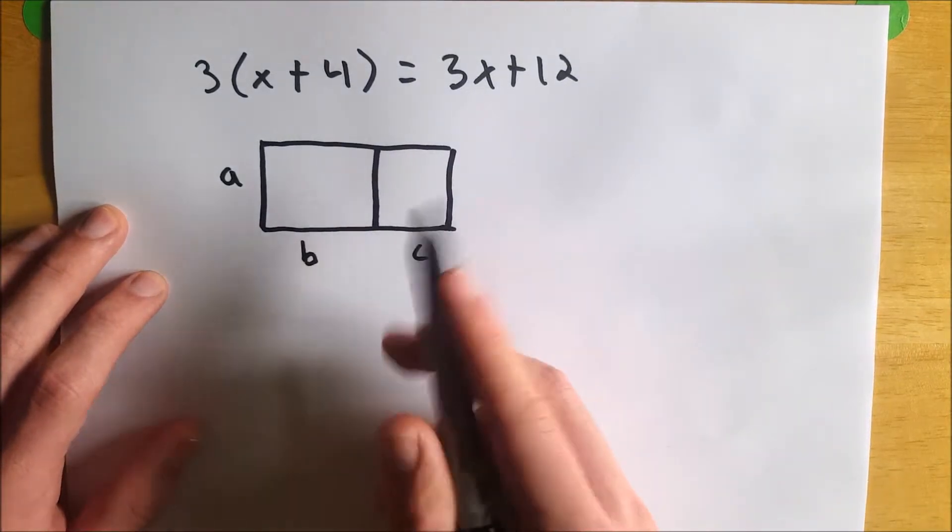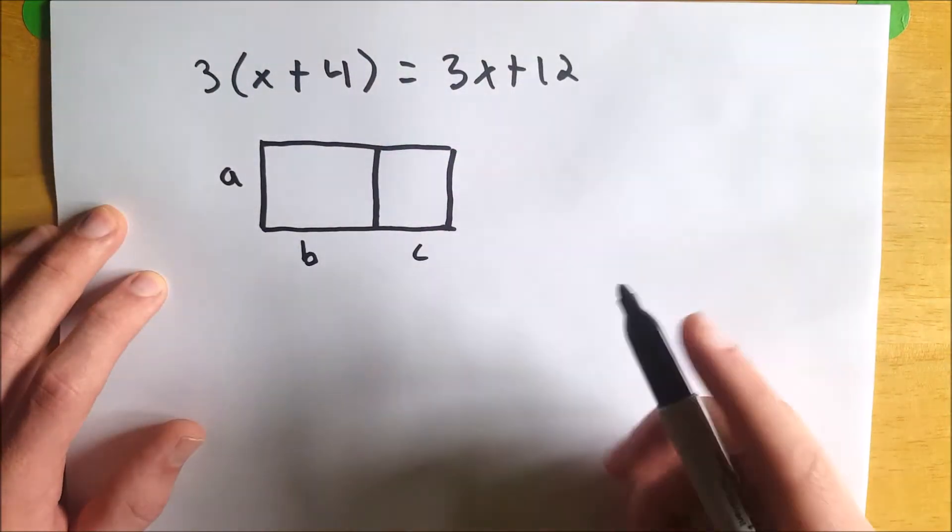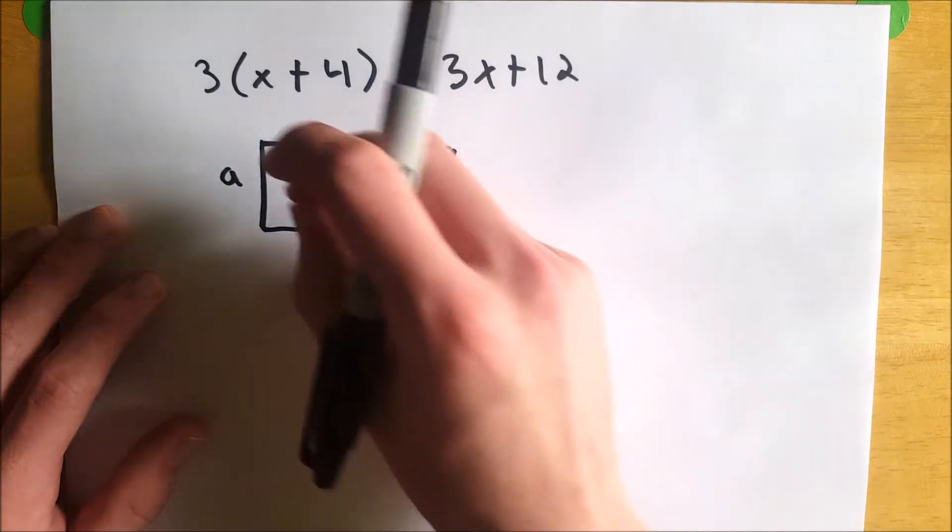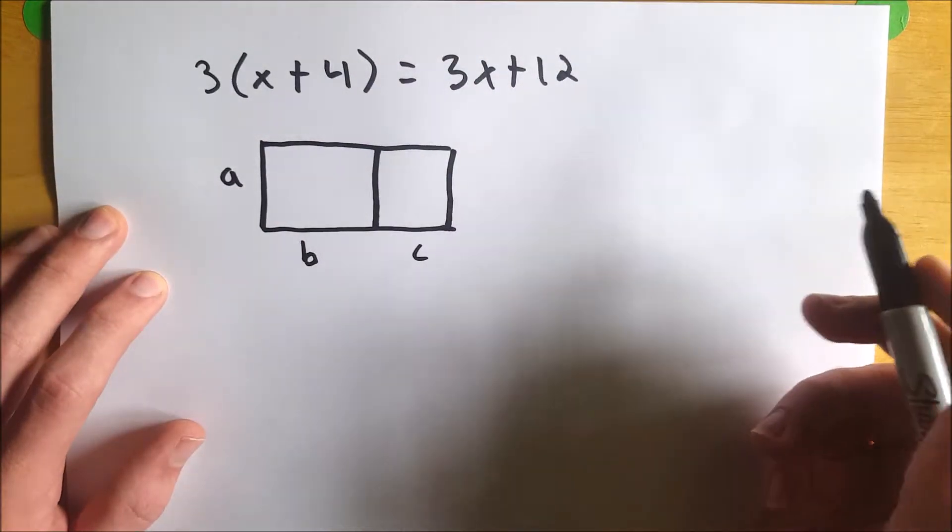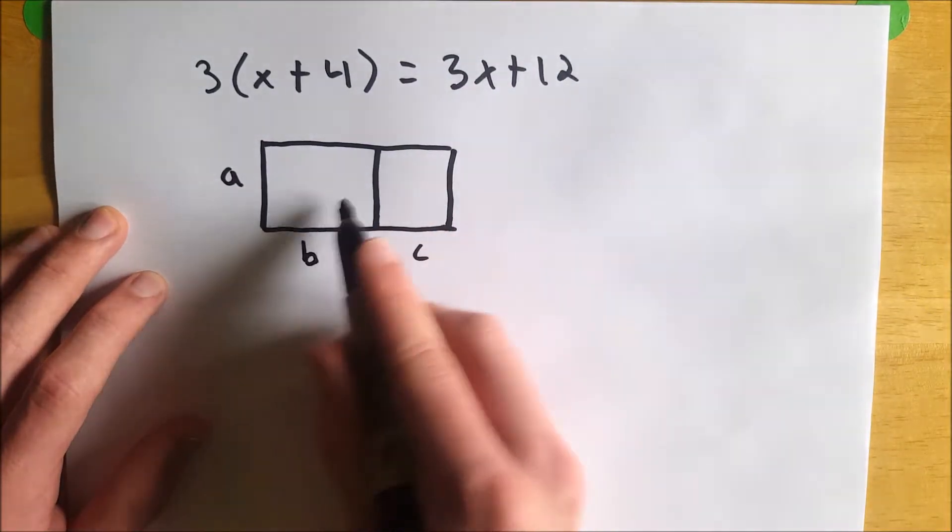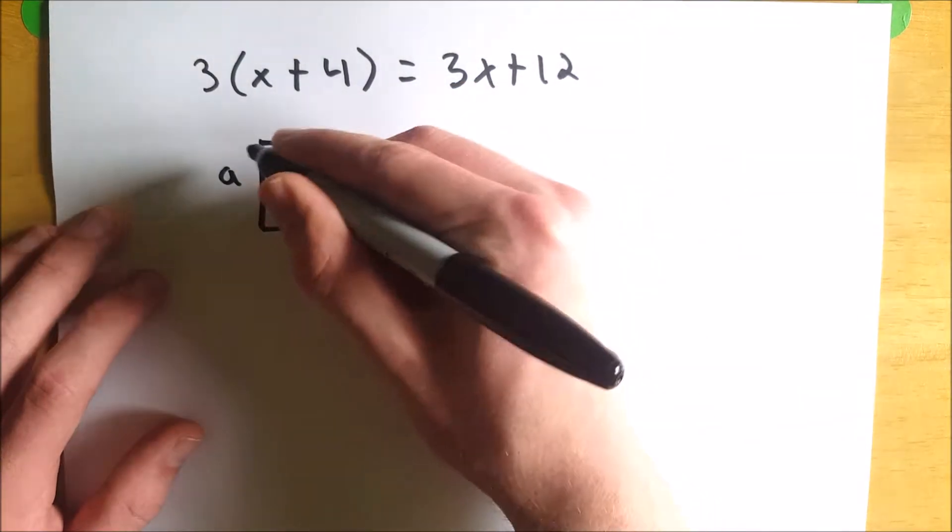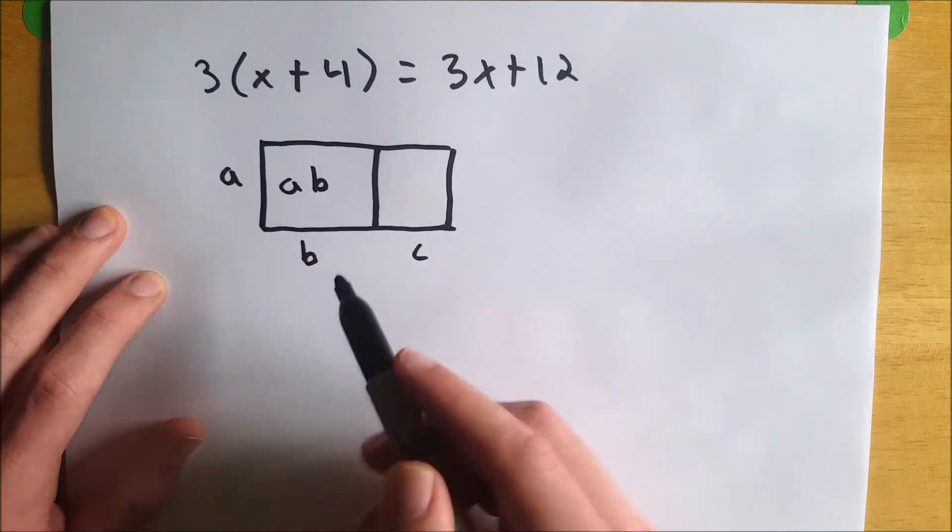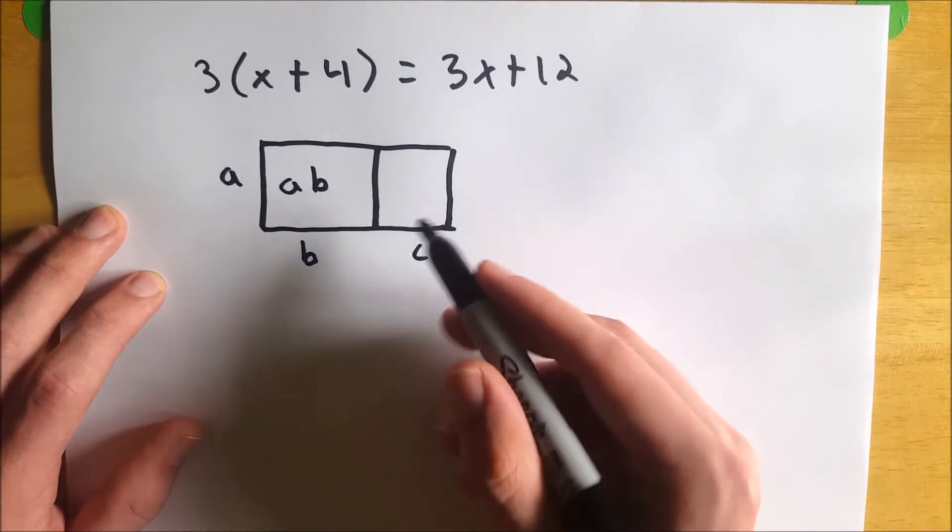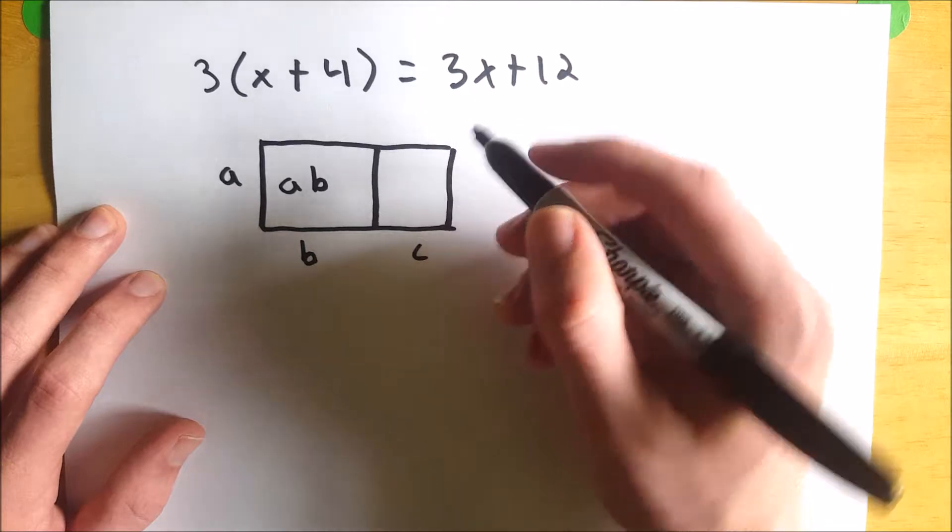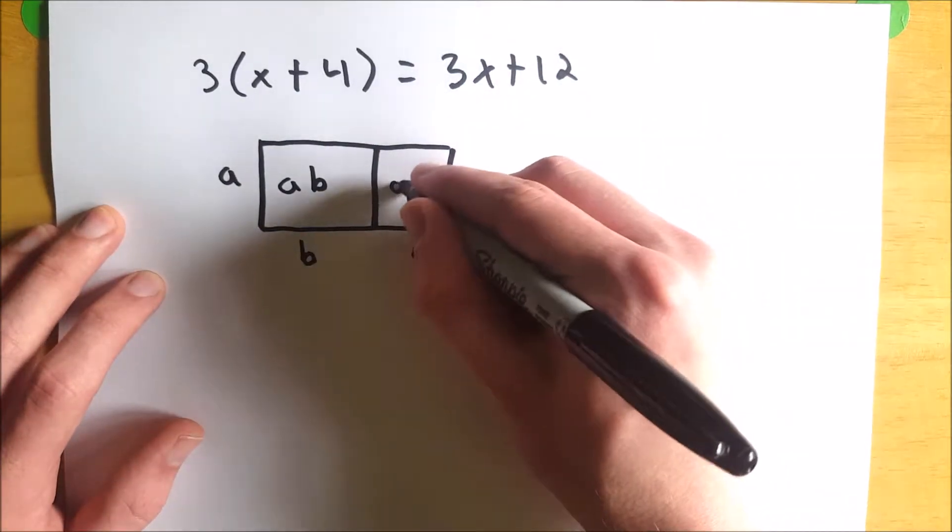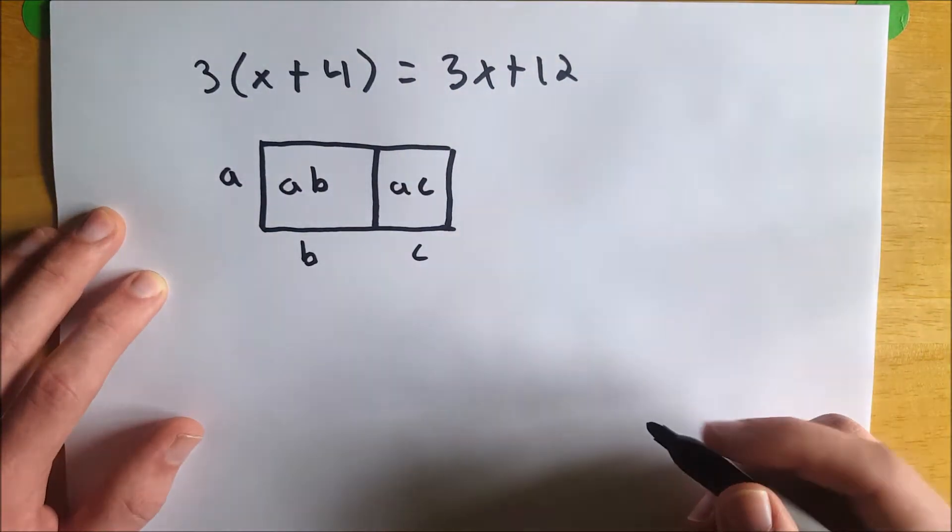So what is the area of the whole rectangle? Well, we know that it would be the sum of the areas of these two smaller rectangles. Well, the area of this small rectangle is a times b. That's just base times height, b times a, a times b, either one. And then the area of this small rectangle is a times c. So now perhaps you see it.